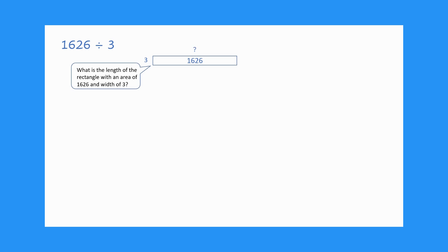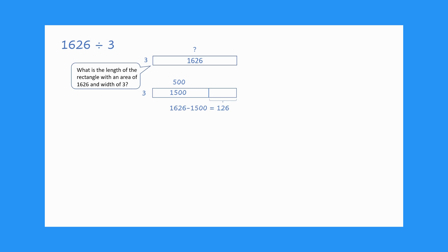Students use knowledge of place value and the inverse operation of multiplication to think of how many are in three groups that total close to 1600. Three groups of 500 would be 1500, which is close to 1600. We can partition our rectangle to show the area of 1500 and label the partition length 500. We then take three groups of 500, or 1500, from our area of 1626, which equals 126.